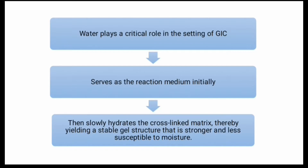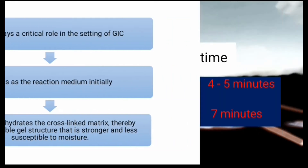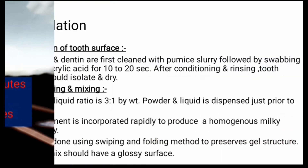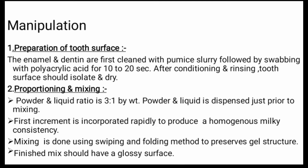Water plays a critical role in the setting of GIC — it serves as the reaction medium initially, then is slowly added into the cross-linked matrix, yielding a stable gel structure that is stronger and less susceptible to moisture. Setting time for Type 1 GIC is 4 to 5 minutes and for Type 2 GIC is 7 minutes.